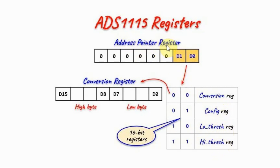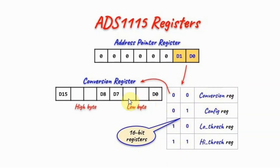The address-pointer register is an 8-bit register, and the two least-significant bits are used to determine which of the four registers will be accessed, so this register acts as a pointer to those four registers. The conversion register is a 16-bit register which contains the 16-bit conversion result, split into a low-byte and a high-byte.